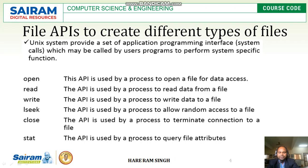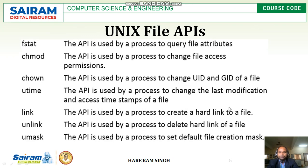The stat API is used by a process to query file attributes. The different file attributes include file type, owner's permission, hard link count, group name, owner name, user name, access permission, and size of the file — seven attributes in total. The stat API is used to query all these attributes of a file.